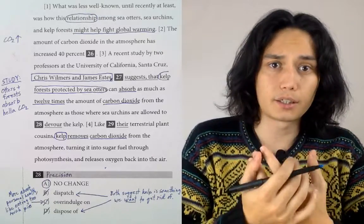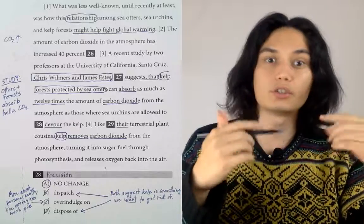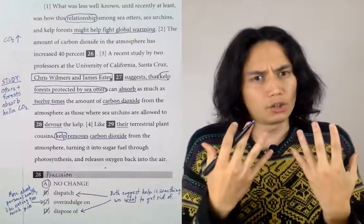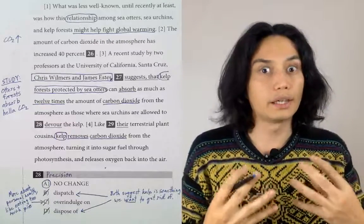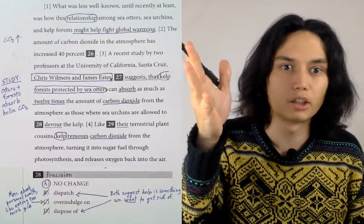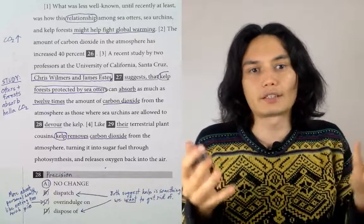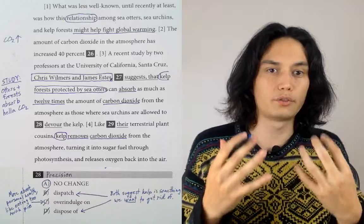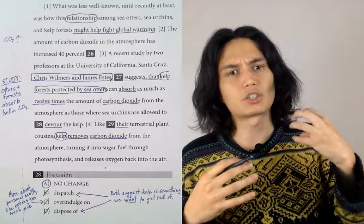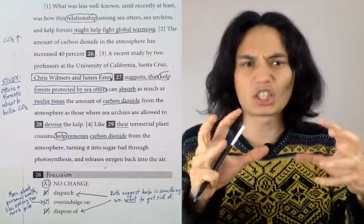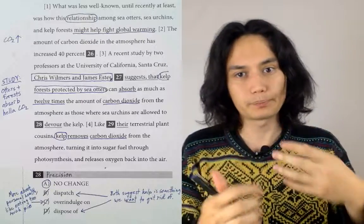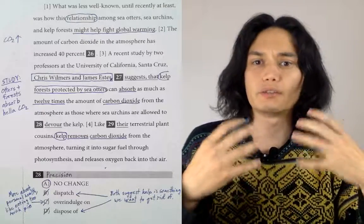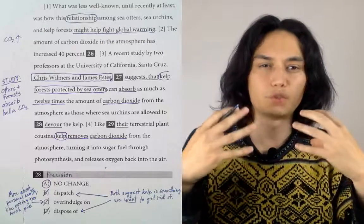The word devour sort of means to eat voraciously or ravenously. If you're devouring something, you think about a lion devouring its kill or a really hungry person devouring a meal. That makes sense because sea urchins are kind of a scourge, like locusts. We are generally on team kelp. Kelp helps fight global warming. So it makes sense to be describing these sea urchins as viciously, attackingly eating the kelp.